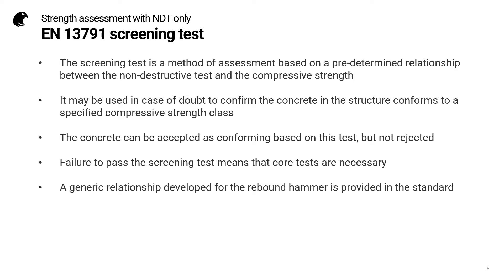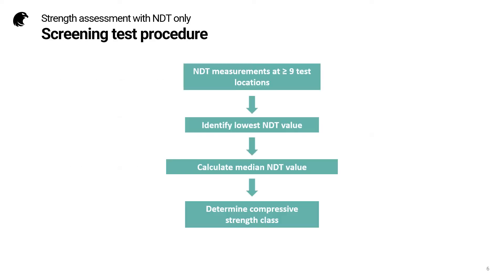A generic relationship developed for the rebound hammer is provided in the standard. The workflow for the screening test begins by doing NDT measurements at a minimum of nine test locations. We identify the lowest NDT value, calculate the median NDT value, and using this information we determine the compressive strength class.